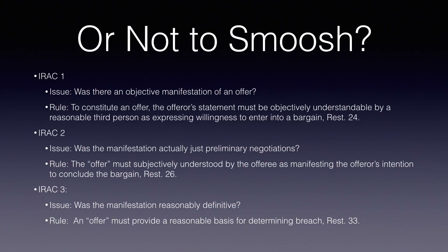On the other hand, depending on the facts, we may not want to smush it together. As you can see on your screen, we end up with a lot more content—actually three separate IRACs, one for each of these sub-rules or elements to the rule of offer. The first would be the issue of whether there was an objective manifestation of an offer, stating the rule from Section 24. The second issue would be whether the manifestation was actually just preliminary negotiations, stating the rule from Section 26. And finally, a third separate IRAC with its own issue, rule, analysis, and conclusion on whether the manifestation was reasonably definite, with the rule from Section 33.